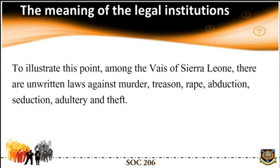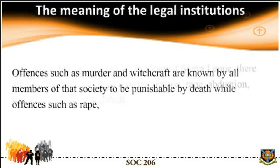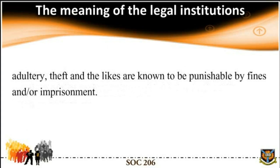Customary law is the traditional rule of practice that has become an integral part of the life of the country, treated as accepted and respected behavior in the community, and is treated as legal obligation. For example, among the Igbos of Nigeria, there are unwritten laws against murder, treason, rape, abduction, seduction, adultery, and theft. Offenses such as murder and witchcraft are punishable by death, while offenses such as rape, adultery, and theft are punishable by fines or other punishments.